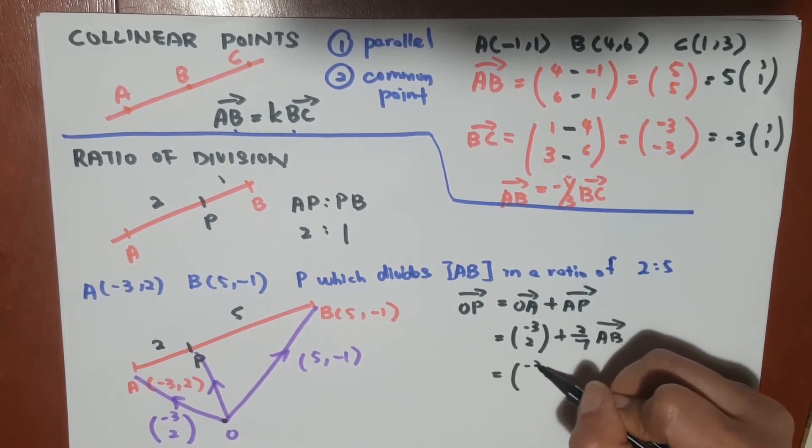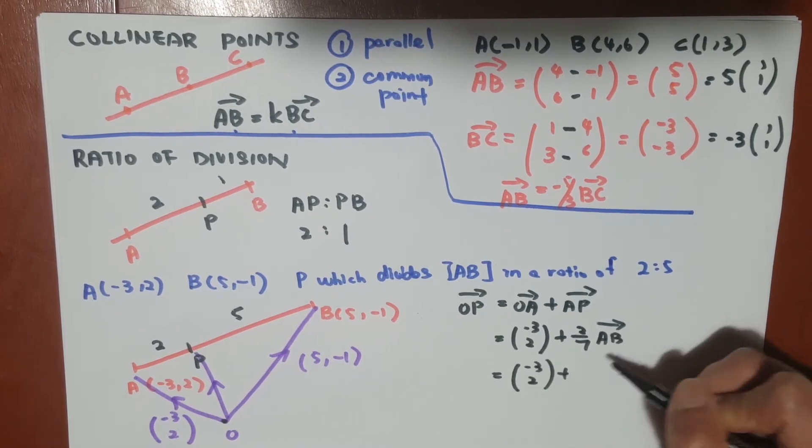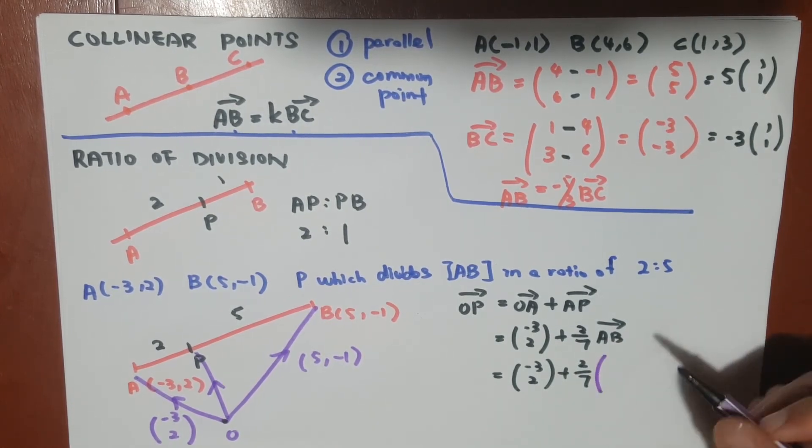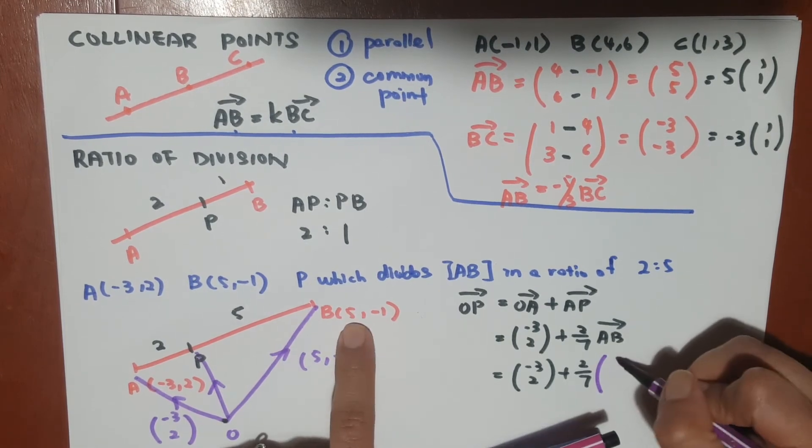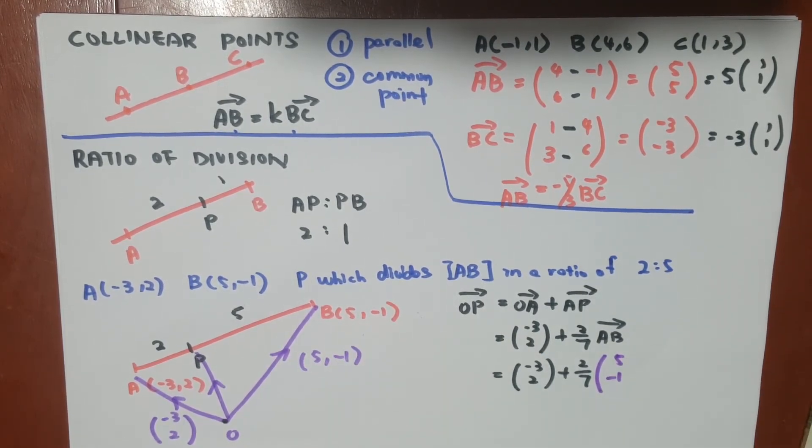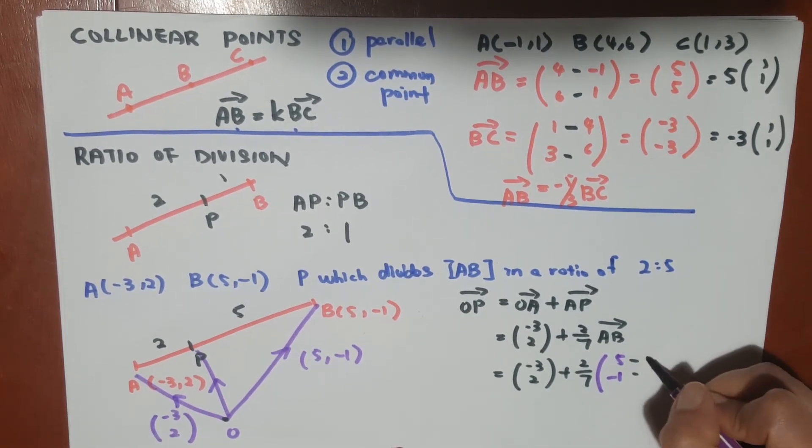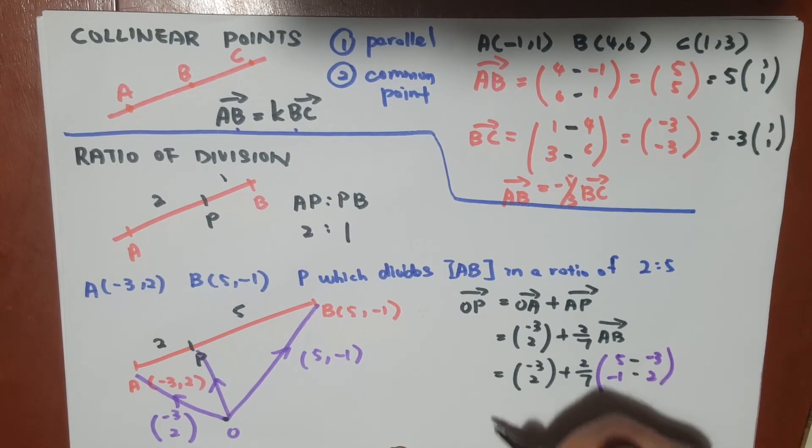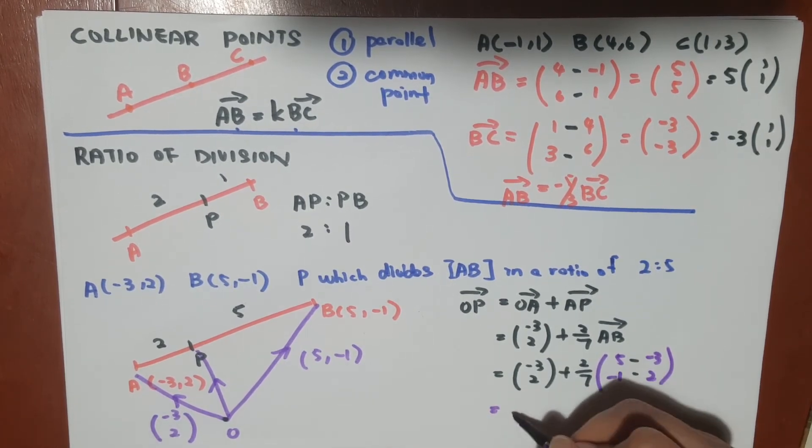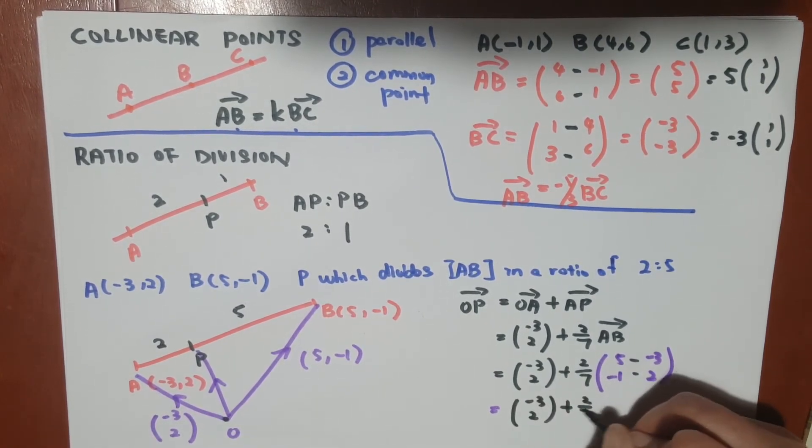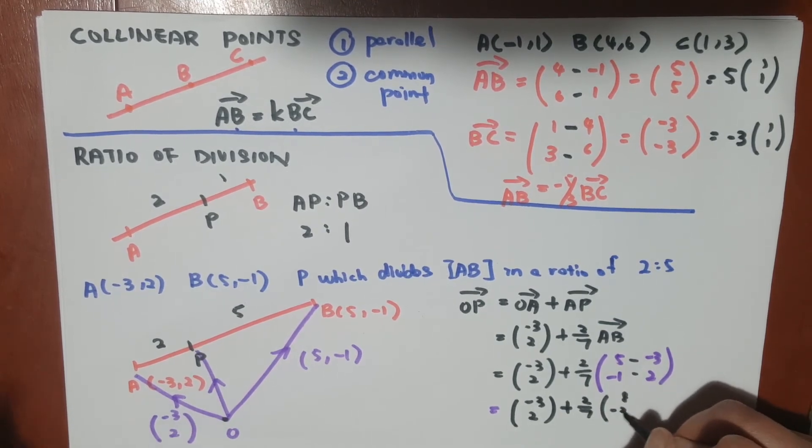We need to solve our vector AB first. Vector AB is we take B minus our vector A, which is (-3, 2). By doing this, we find that the answer is (-3, 2) plus 2/7 times (8, -3).